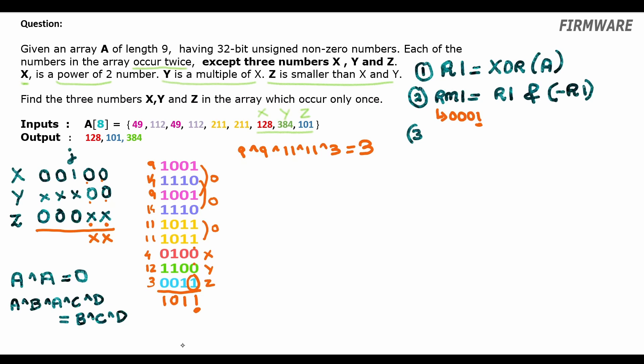So, step three: we have result Z equal to XOR of all those numbers in the array which satisfy the condition: array number ANDed with rightmost set bit of result 1 is not equal to 0. And we have Z equal to 3 as the output here. Great.